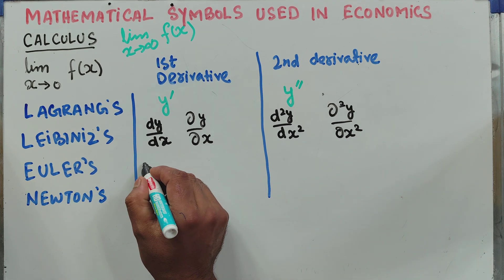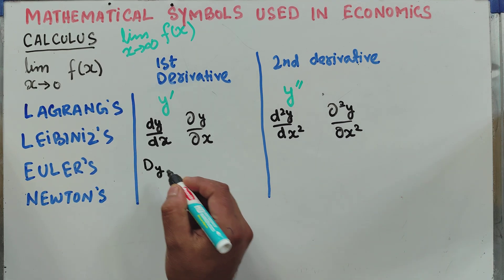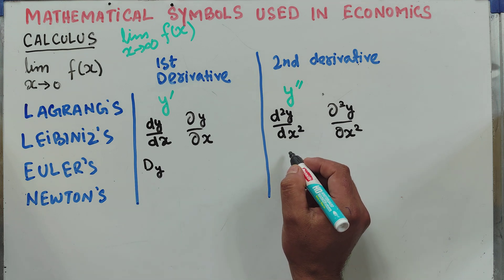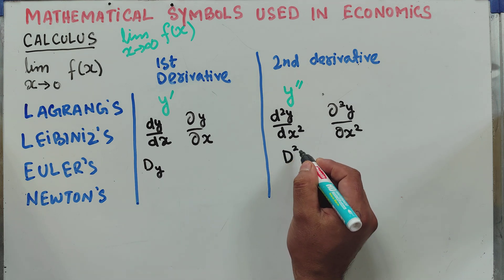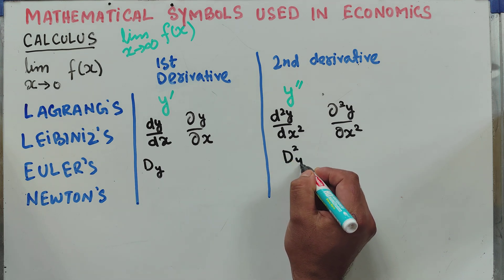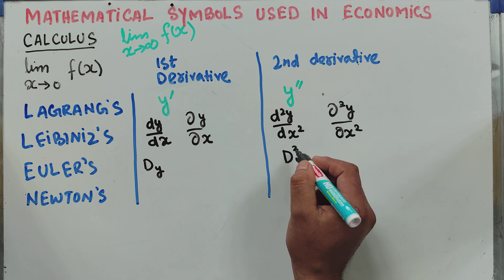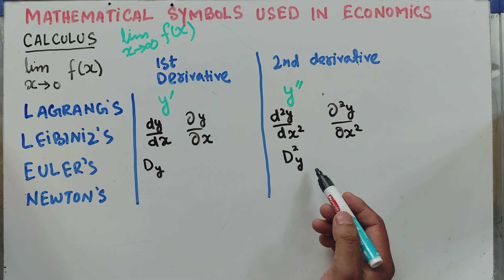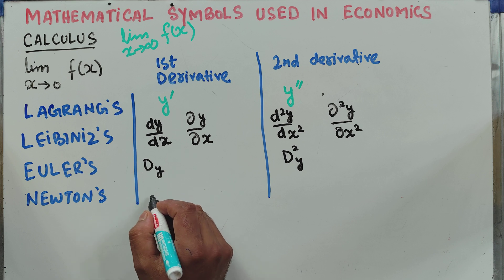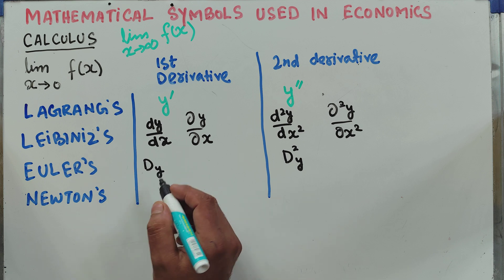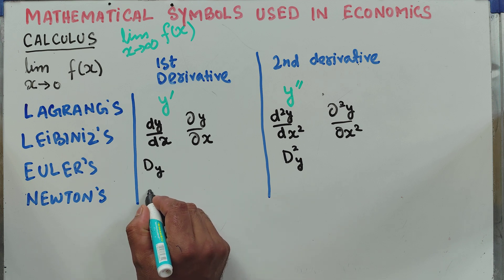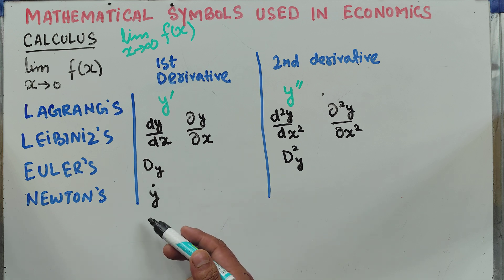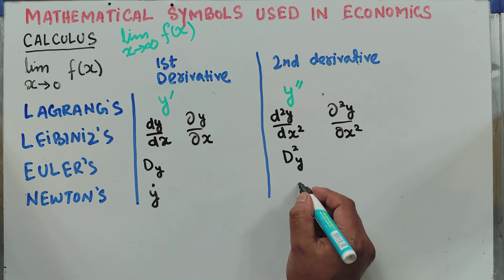Then we have Euler's notation, denoted by D subscript of y for the first derivative, and D squared subscript of y for the second derivative. Lastly, we have Newton's notation, denoted by y dot for the first derivative.